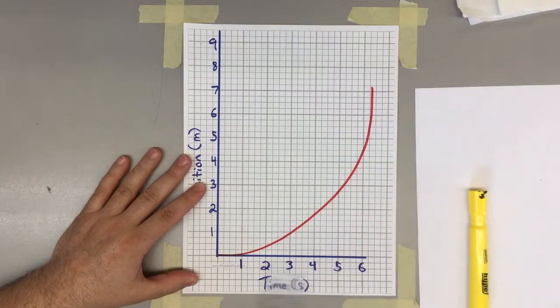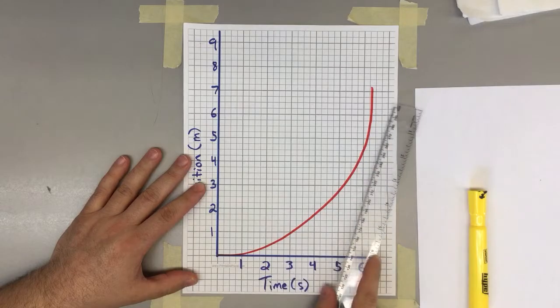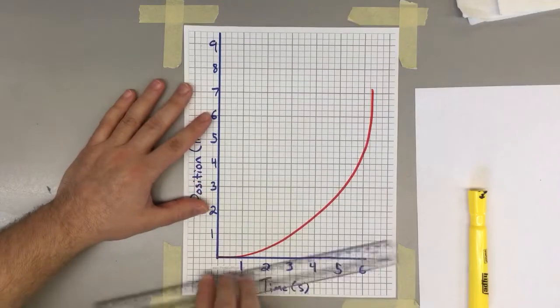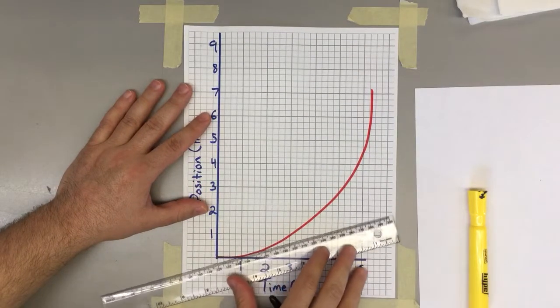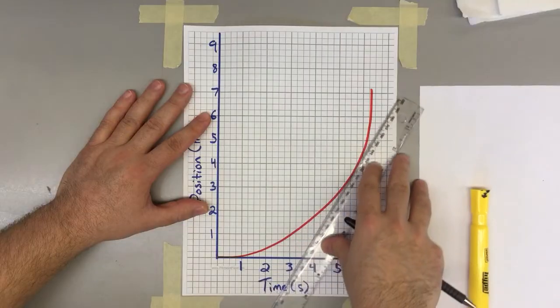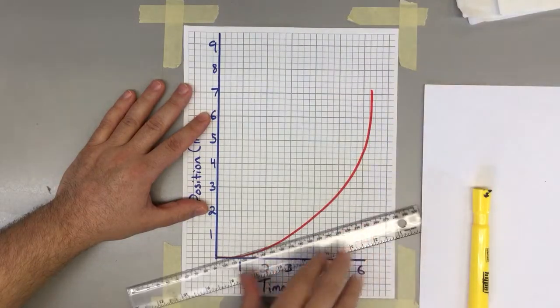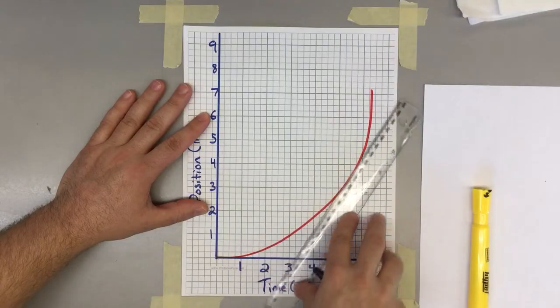As we talked about previously, a position time graph that has a curve tells us that the speed is changing as time goes along. So like we looked at before, if we generalize the slope of the curve as it proceeds, we can see that it becomes steeper and steeper as time goes on. So we actually have an object that's speeding up here.